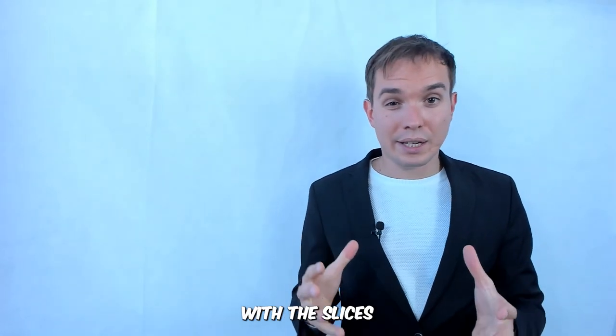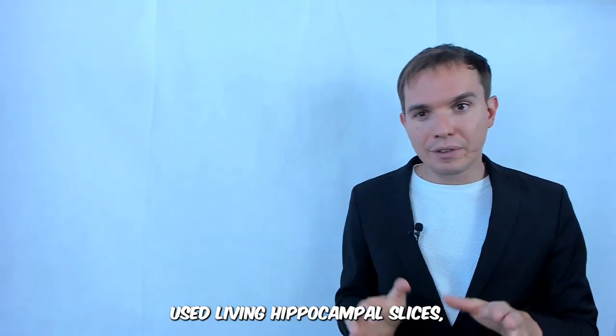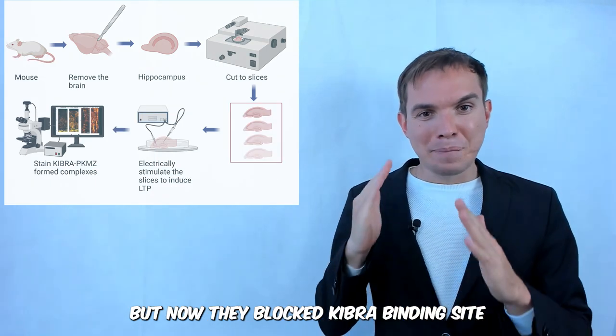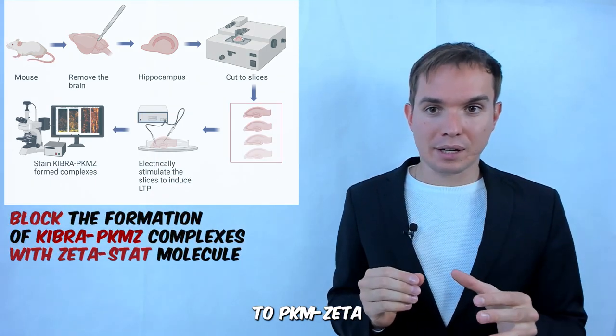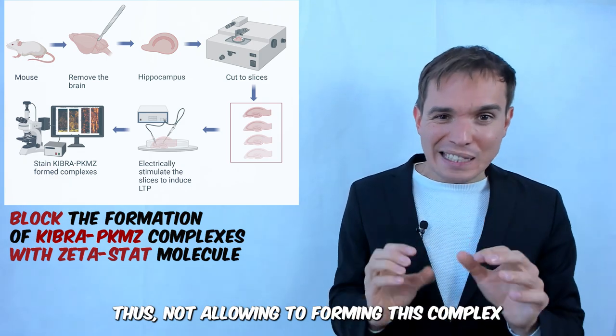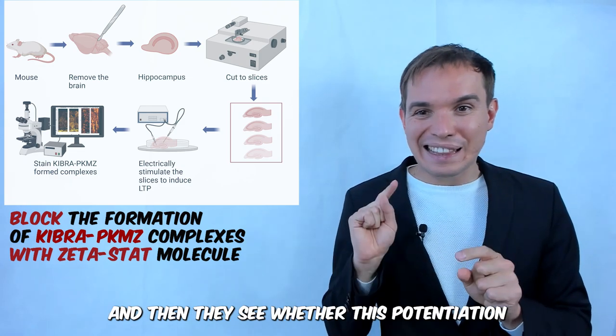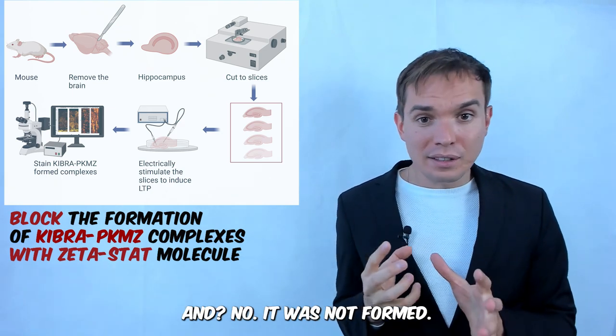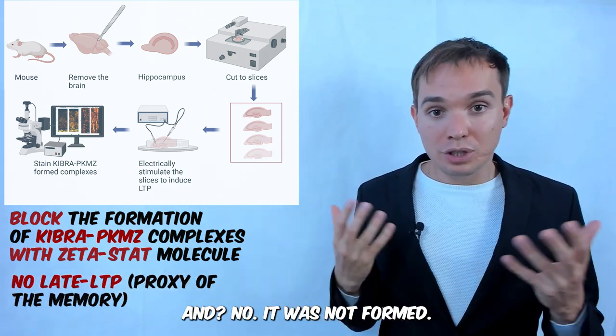Then there was another experiment with the slices where scientists again used living hippocampal slices, applied electrical stimulation, but now they blocked KIBRA binding site from PKMζ with an inhibitor named Zeta-Stat. That's not allowing the complex to form, and then they see whether this potentiation is formed or not. And no, it was not formed.